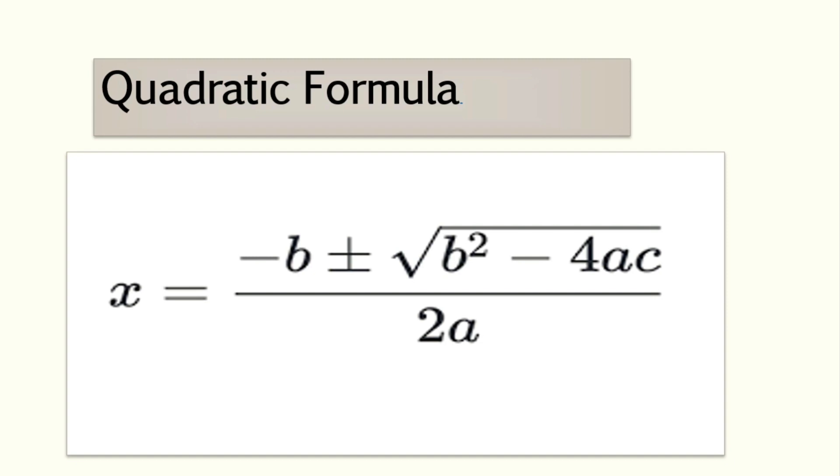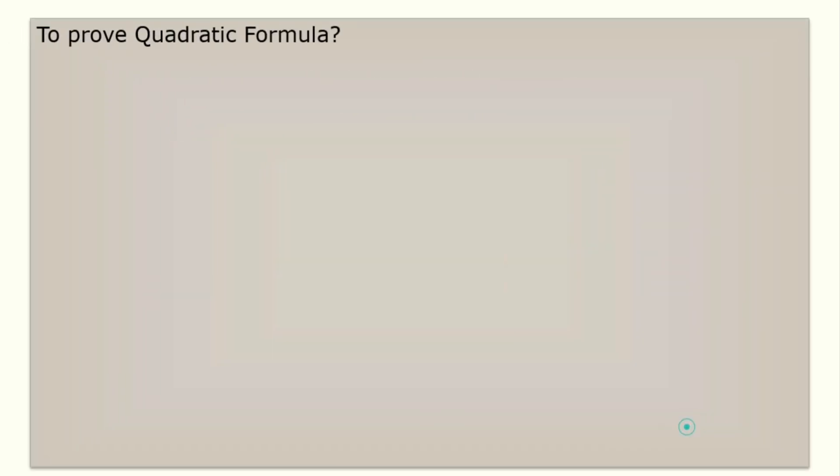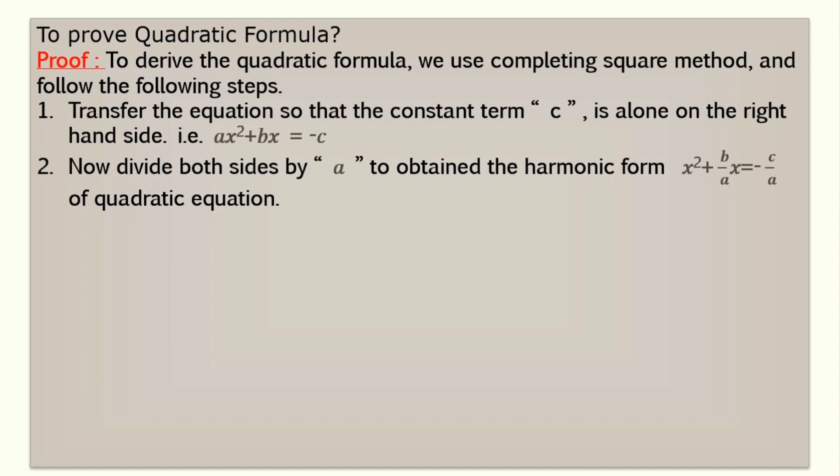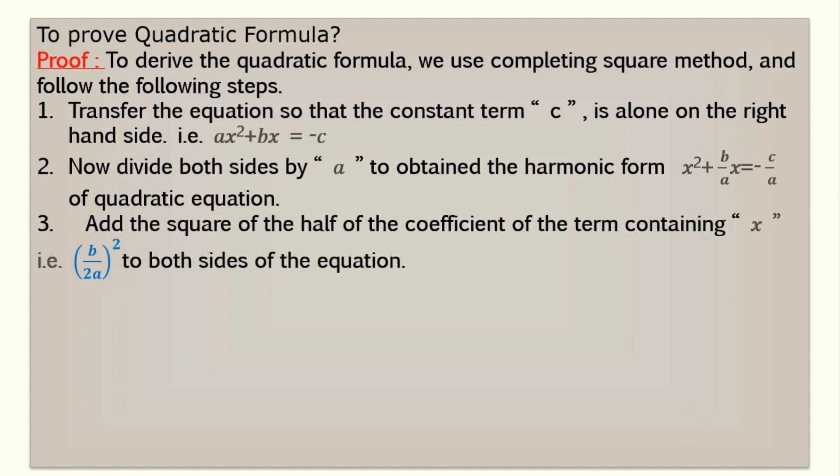So you know you are familiar with the completing square method. There are some steps. To prove the quadratic formula we will first transfer the constant term of the quadratic equation to the right, and then we'll transform the quadratic equation to standard form. And then we'll add the coefficient of x divided by 2, that is b by 2a whole square, to both sides of the equation.